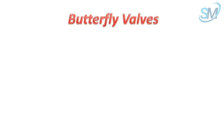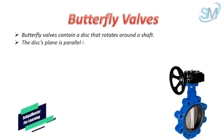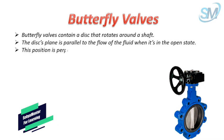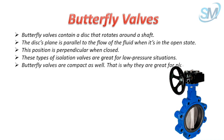Butterfly valves contain a disc that rotates around a shaft. The disc's plane is parallel to the flow of the fluid when in the open state, and perpendicular when closed. These types of isolation valves are great for low-pressure situations. Butterfly valves are compact, making them great for places with limited space.